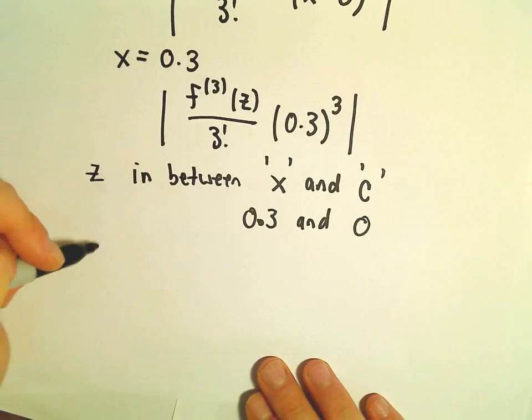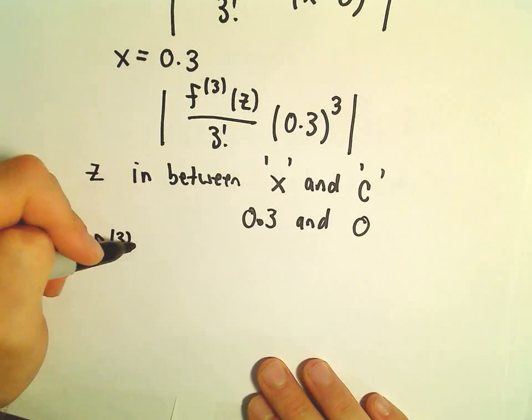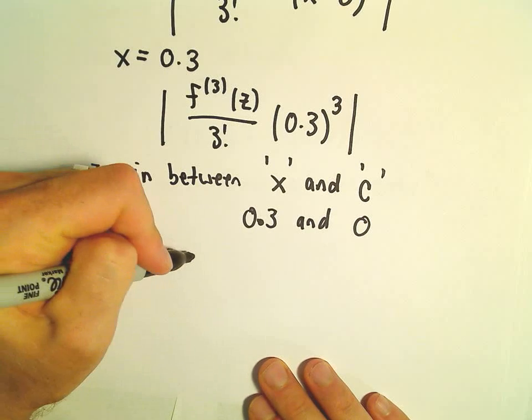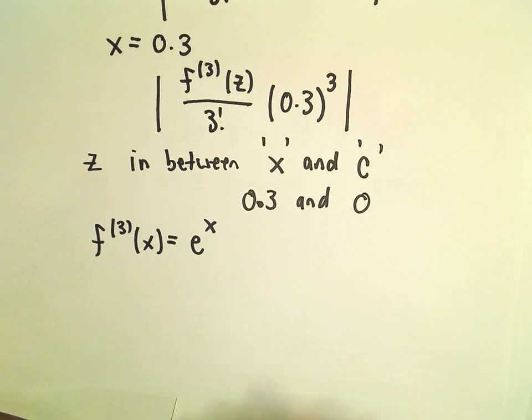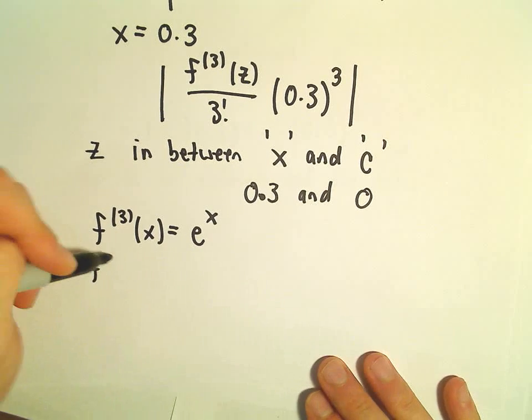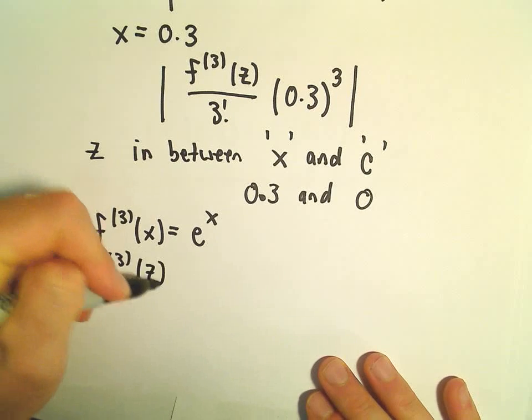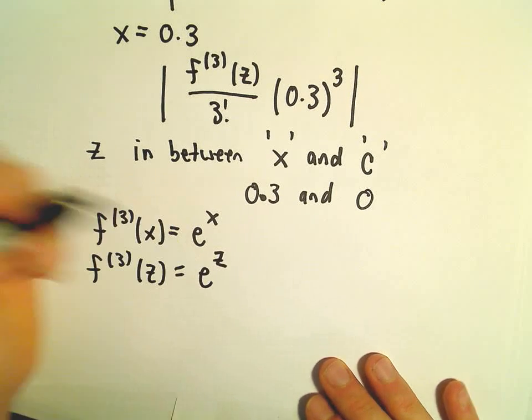Our function here is e to the x, so the third derivative is also going to just be e to the x. So if we plug in z, we would just get e to the z.